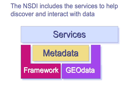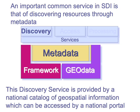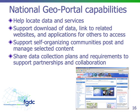The NSDI also includes services to help you discover and interact with geospatial data. There are three kinds of services. The first and most prominent in SDI is a discovery service, which allows you to discover resources through metadata and descriptive fields. The discovery service is provided by a national catalog of geospatial information accessed through a national portal. In the U.S., we have a geospatial one-stop portal and a catalog that harvests from over 100 collections. These national geoportal capabilities help people locate data and services, support direct download, link to related websites, or link to email or an order form for data not online.